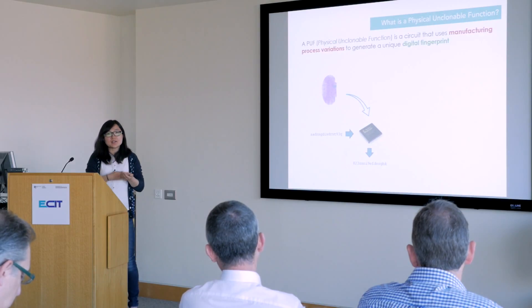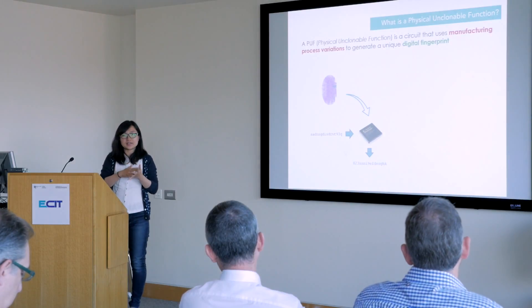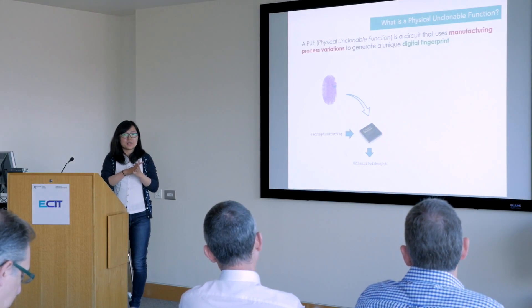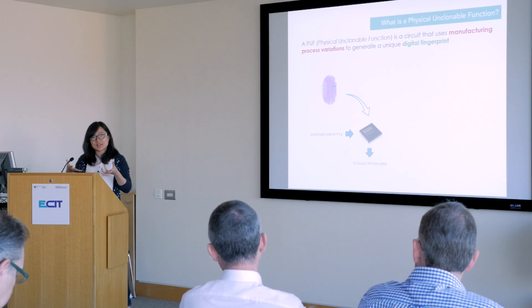Physical unclonable functions (PUF) are an alternative method to protect the security of the product. The PUF circuit uses manufacturing process variations on chips to generate a unique digital fingerprint. Just as every person has a fingerprint, we can use PUF to give every chip and every product an electronic fingerprint.